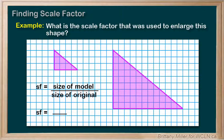You could have picked any side of the triangle to compare, but I'm going to choose this one. It's four units long in the original and twelve units long in the model. We put those into our handy-dandy formula and get twelve divided by four, which is three. So the scale factor for this enlargement is three.